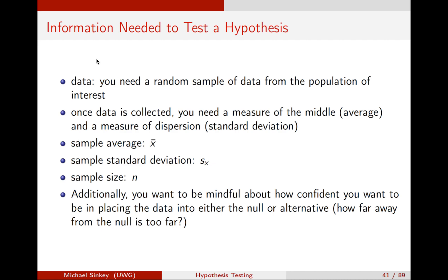I also need a measure of dispersion. If people's responses differ wildly, the null is more likely to be reasonable because the null is more likely to fall into a non-trivial set of those responses. I measure that with a standard deviation — how far are my data from the mean. The sample size, n, is also important; I change how I draw my conclusions based on how much data I have. This is the information I can collect from any quantitative sample: count the number of data points, take the average, and find the standard deviation. That is all I need to test the hypothesis.